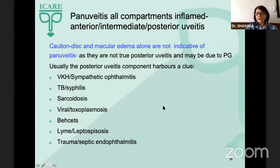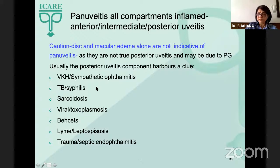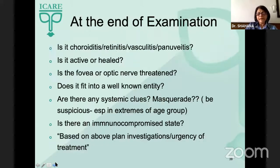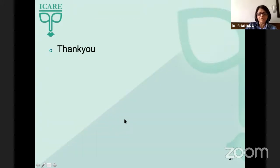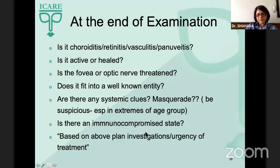Panuveitis is when all three compartments are inflamed. A mere disc and macular edema is not indicative of panuveitis as that is not true posterior uveitis. Entities to consider include VKH, sympathetic ophthalmitis, tuberculosis, syphilis, sarcoid, the virals, toxoplasmosis, and others. At the end of the examination, we should know: what kind of panuveitis is it, is it active or healed, is the fovea or optic nerve threatened, does it fit a known entity, are there systemic clues or masquerades, is the patient immunocompromised — and tailor investigations and urgency of treatment accordingly.